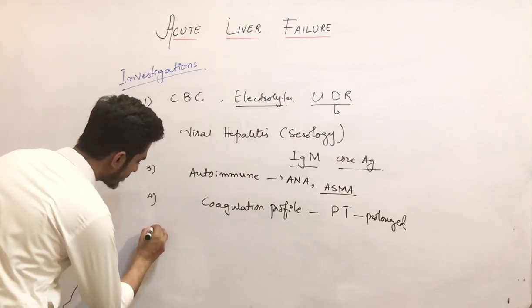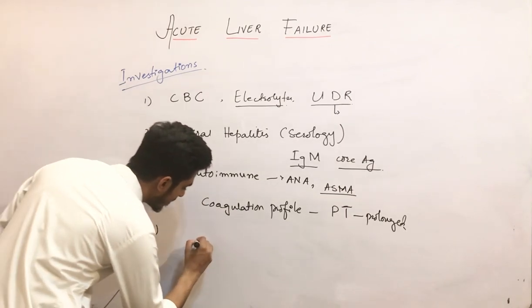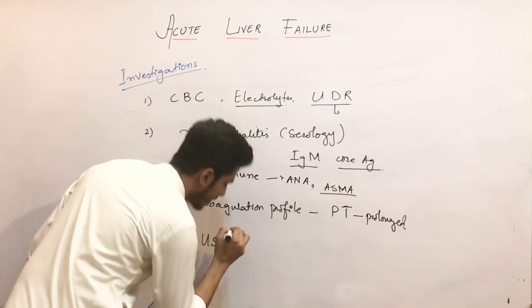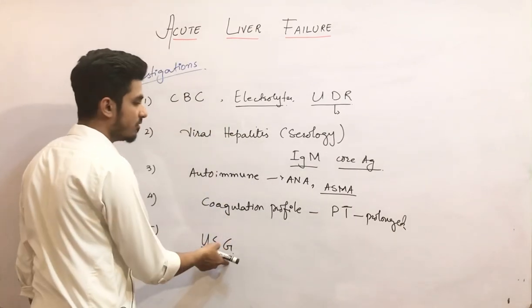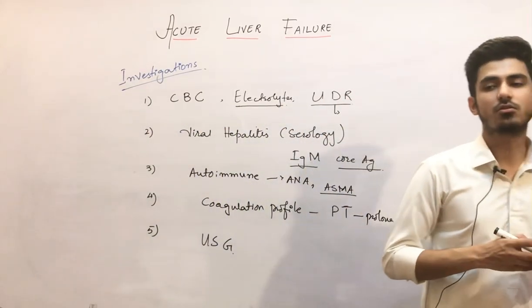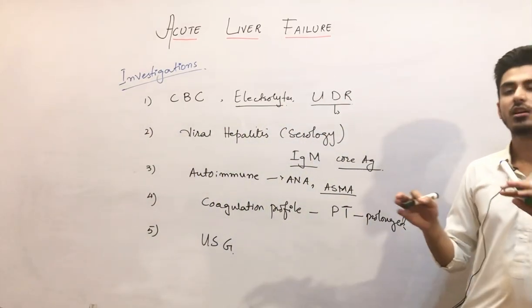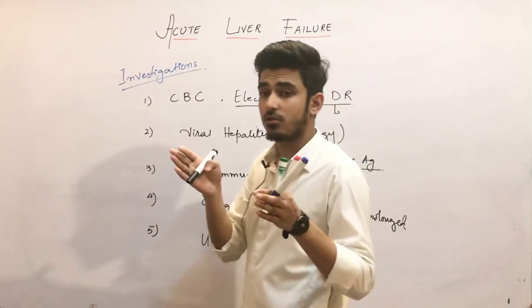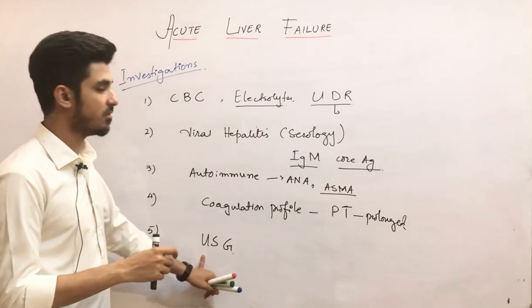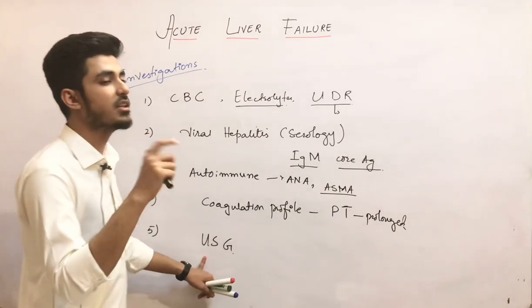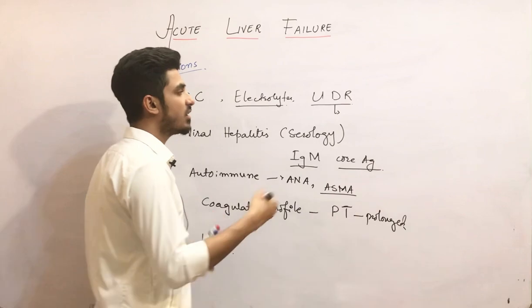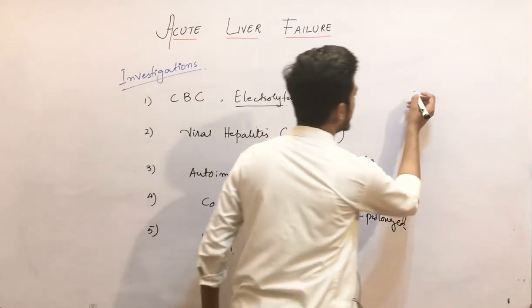You will also do an ultrasound of the abdomen and a Doppler of the hepatic vein — to see that the hepatic veins are normal and to find any abnormality in the liver. These are the investigations. One important thing to note here is about albumin.